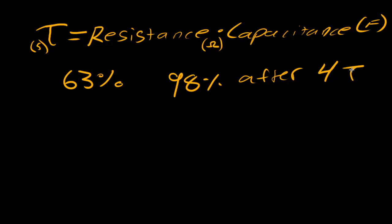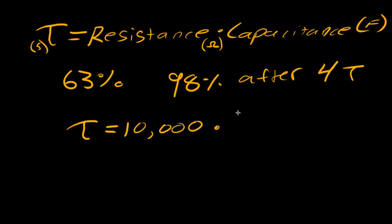Let me try an example. We calculate the time constant: tau equals the resistance times the capacitance. Let's say we have 10,000 ohms of resistance and our capacitor is rated at 1,000 microfarads, which is the same as 0.001 Farads.